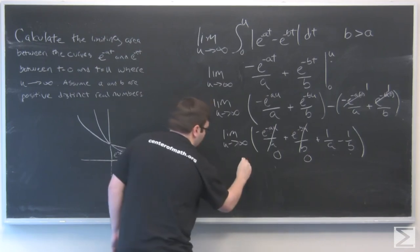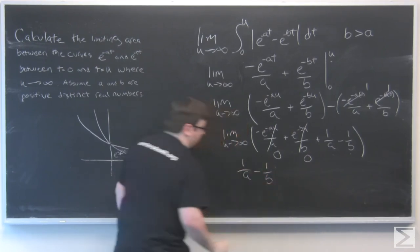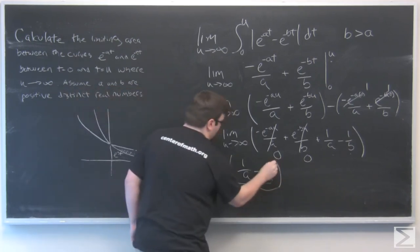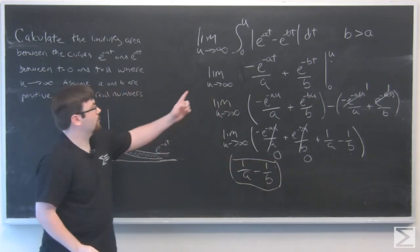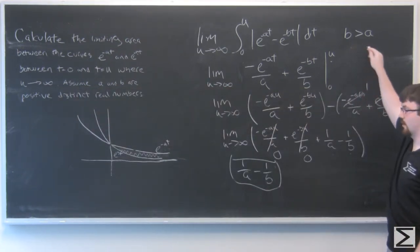So we're left with one over a minus one over b. Now it's important to note that this is our answer, but that was for the case where b is greater than a.